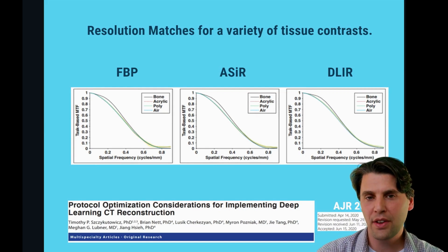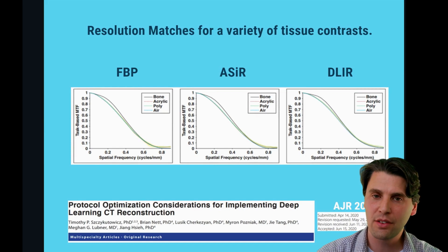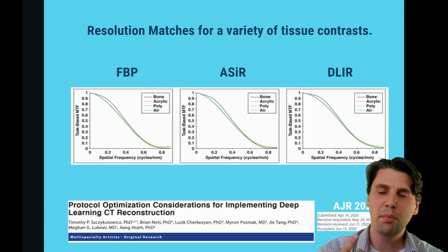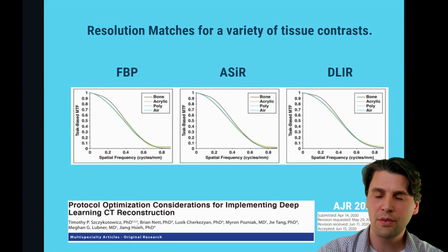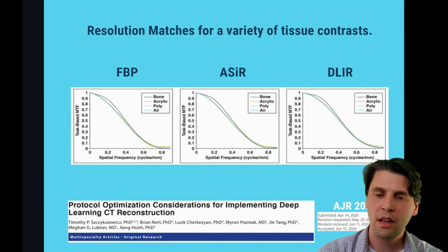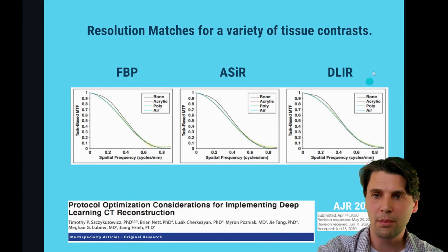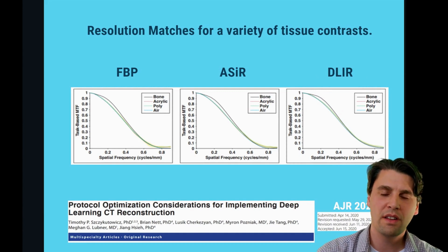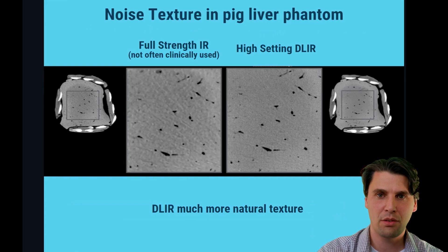The MTF can be measured for different tasks or different tissue types. This is the work of Stikotovic et al., and this demonstrates that for each of these technologies — FBP, ASIR, and DLIR — in comparison with previous techniques for iterative reconstruction, all of these technologies demonstrate good agreement of the MTF as a function of different tissue types. The MTF for deep learning well matches the filtered back projection results.